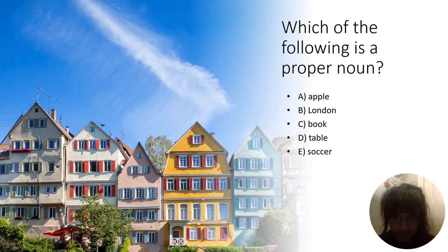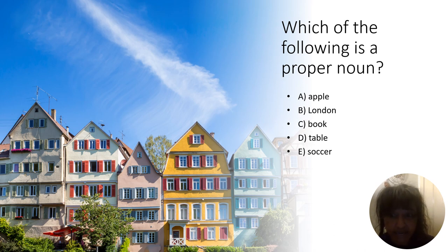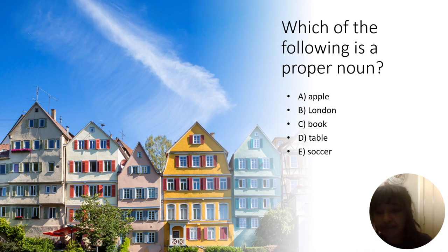Now let's practice what I just explained to you. Which of the following is a proper name? A. Apple. B. London. C. Book. D. Table. E. Soccer. If you said B, London — you are correct!